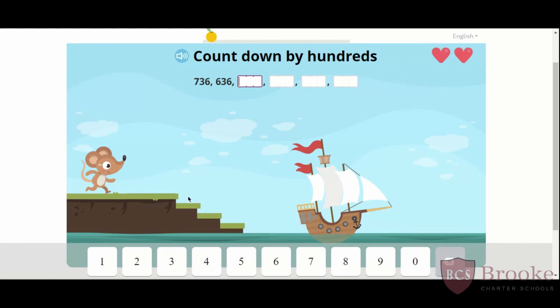Next one. We want to get the mouse to the pirate ship. Read the first number, get ready, go. 736. Next number. 636. Hmm, is this getting bigger by 100 or smaller by 100? How many groups of 100 are in 736? Right, 7. How many hundreds are in 636?